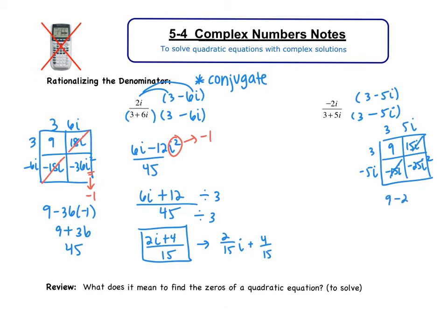So we get 9 minus 25, but replace i squared with negative 1. So this becomes 9 plus 25, which is 34.